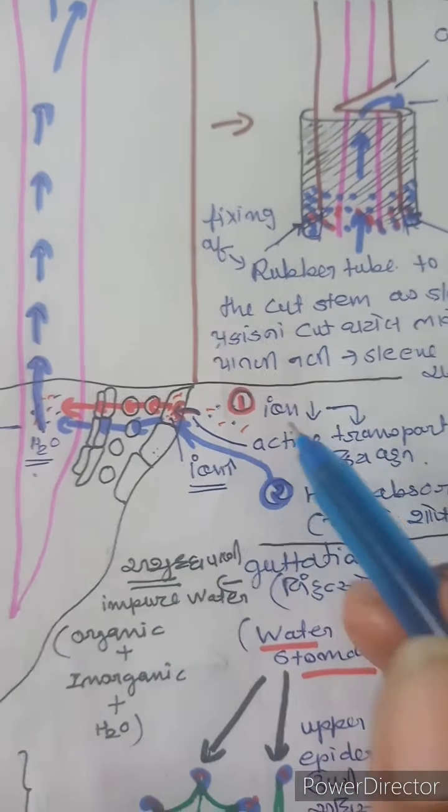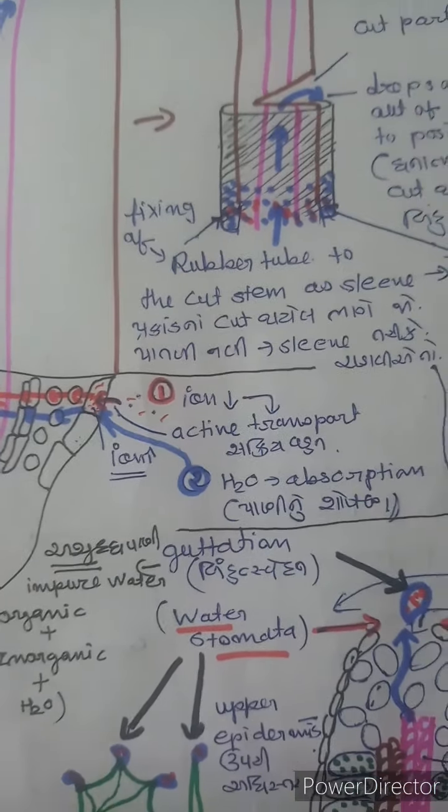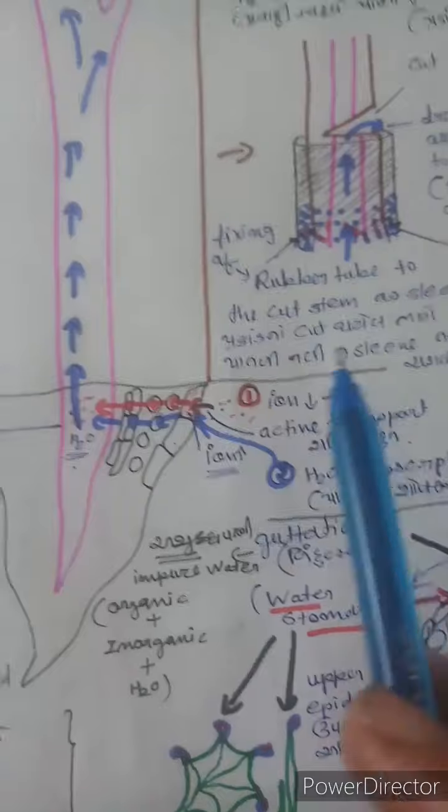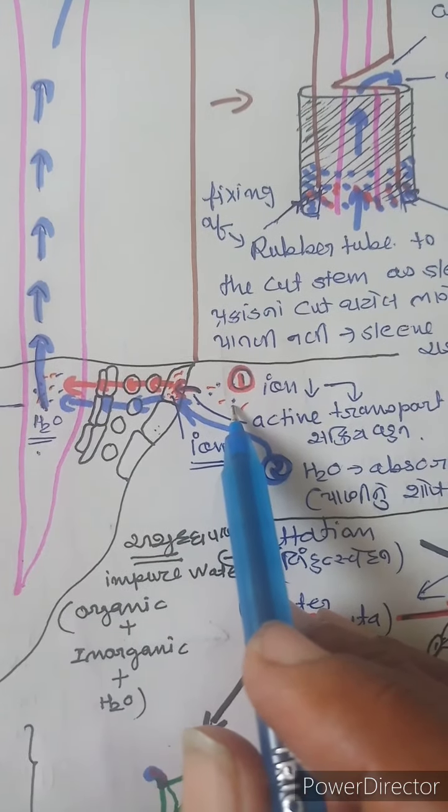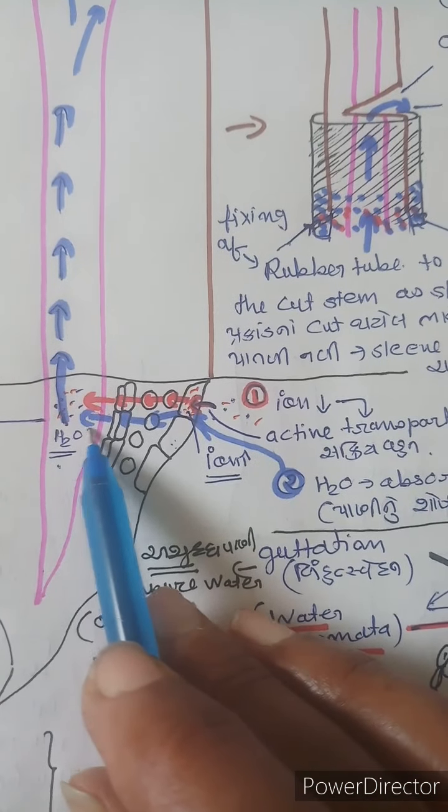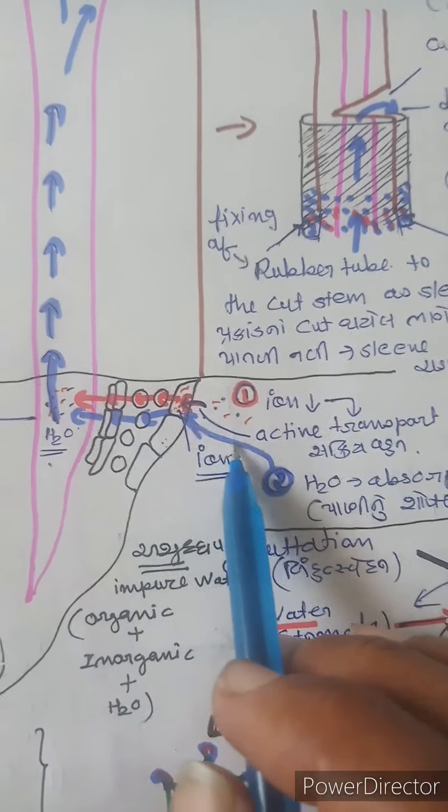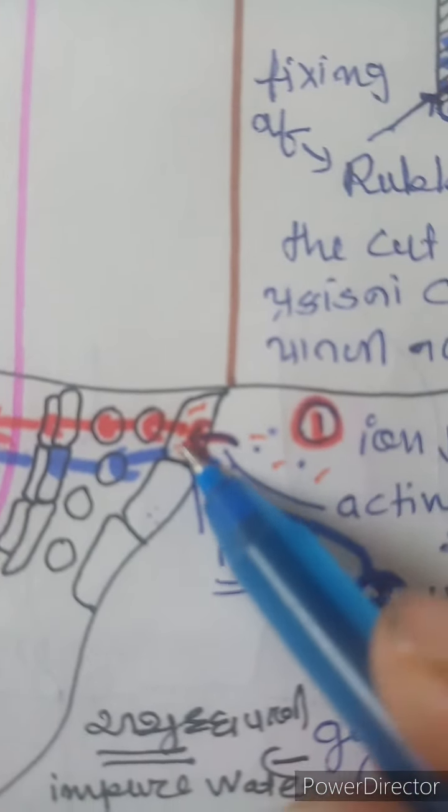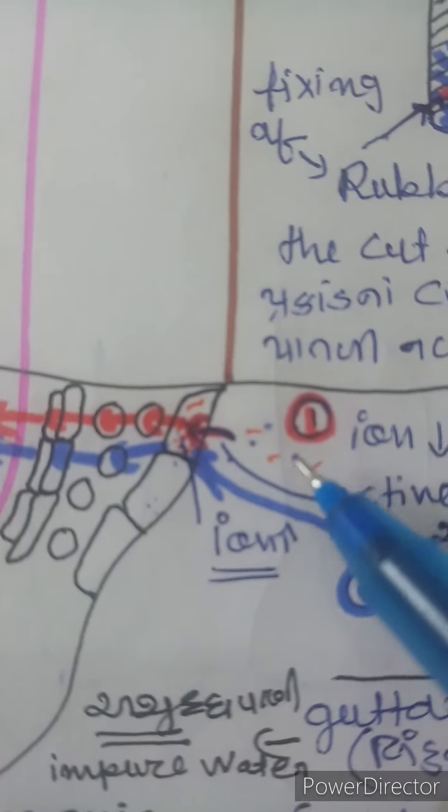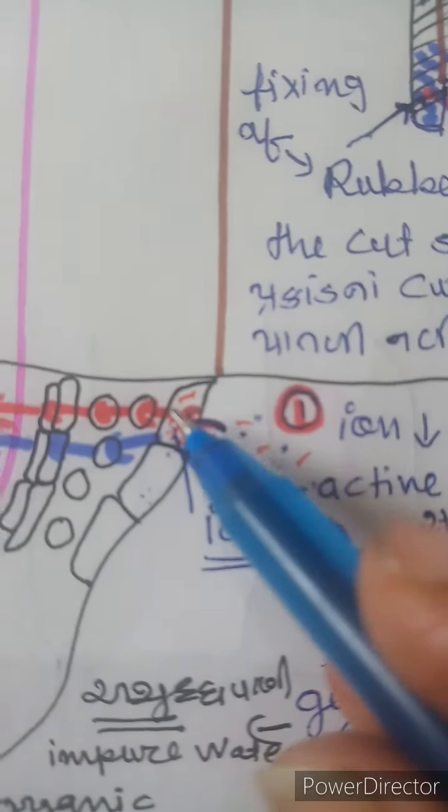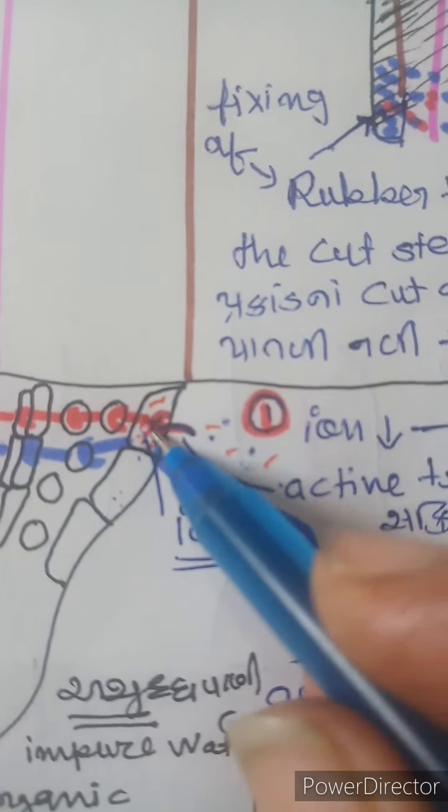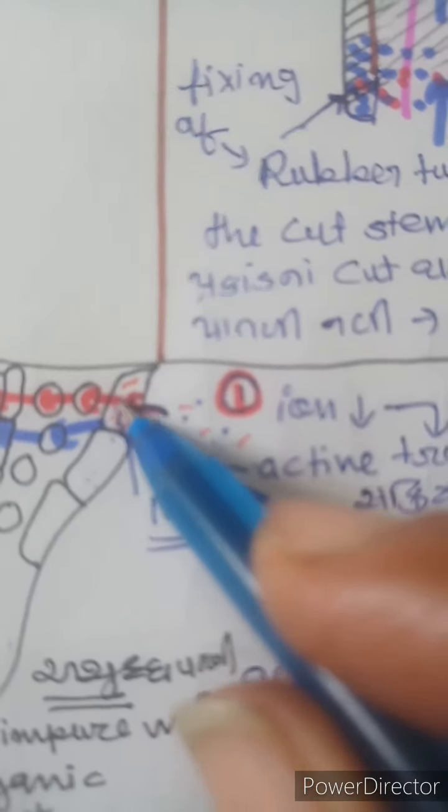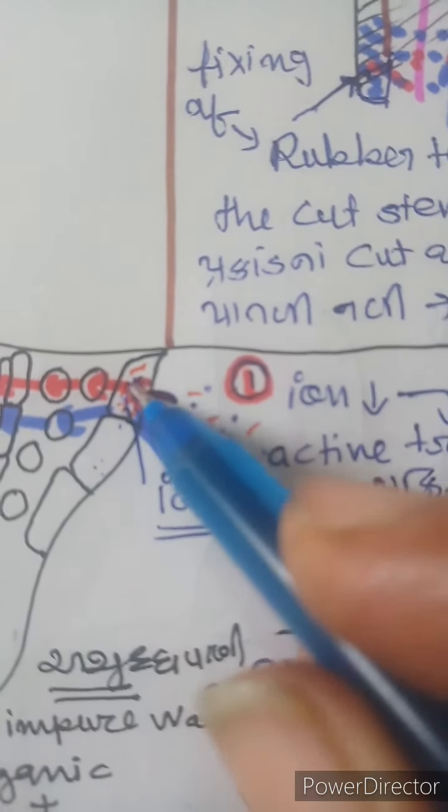First of all, ions from the soil are actively transported into the vascular tissues of the root, into the xylem tissue. When ions are transported into the xylem, the concentration increases there. Where there is higher concentration, the osmotic pressure is more. It will be more than three atmospheres. Salt will be more in the cell, creating a concentrated solution.